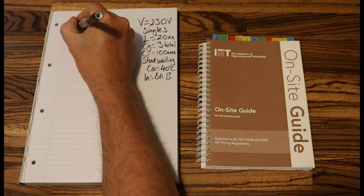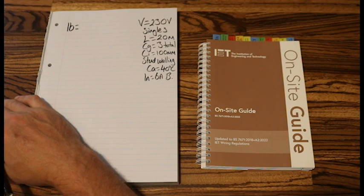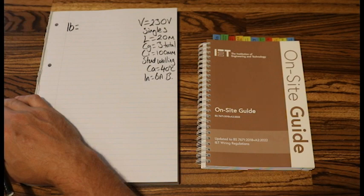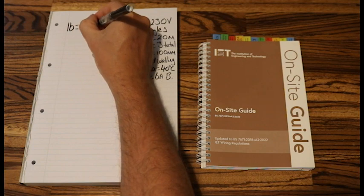So IB equals, well, our question doesn't tell us anything about power, doesn't tell us anything about what we'll be using. It just tells us that it's a lighting circuit and it will be covered by a 6 amp MCB. So that does mean the maximum IB can be 6. So if you have a question that doesn't give you any information about the power or current it will be using, but it does tell you what IN, what protective device you'll be using, that number will also be your IB. So our IB equals 6 amps.